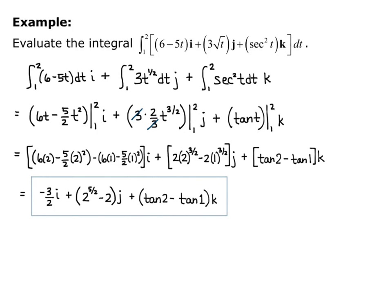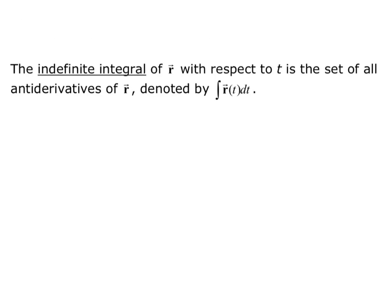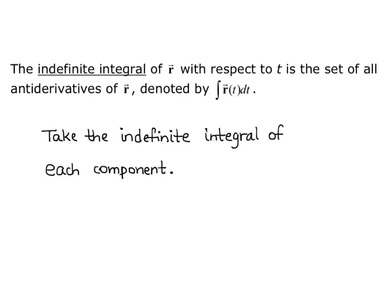Now, what do we do if we do not have bounds — that is, if we have an indefinite integral? The indefinite integral of r with respect to t is the set of all antiderivatives of r, denoted by the integral of vector r of t dt. You take the indefinite integral of each component.